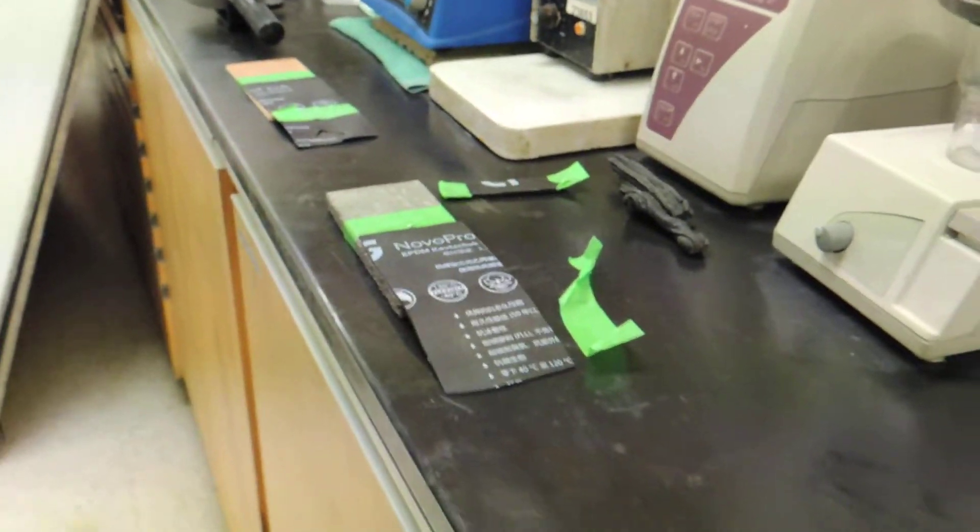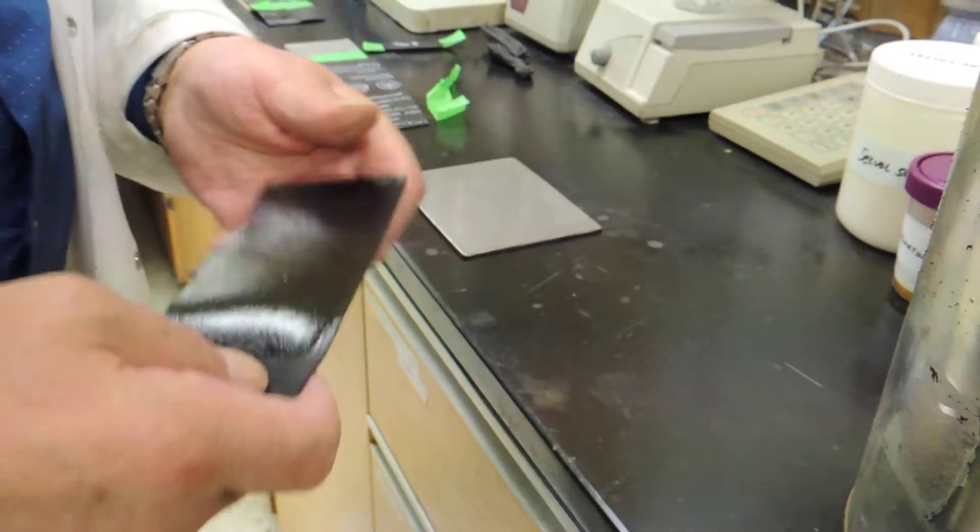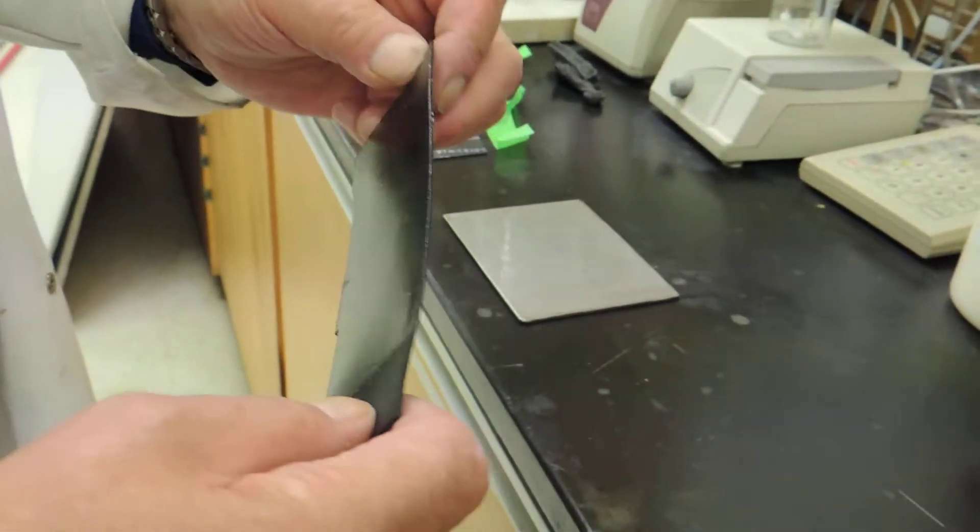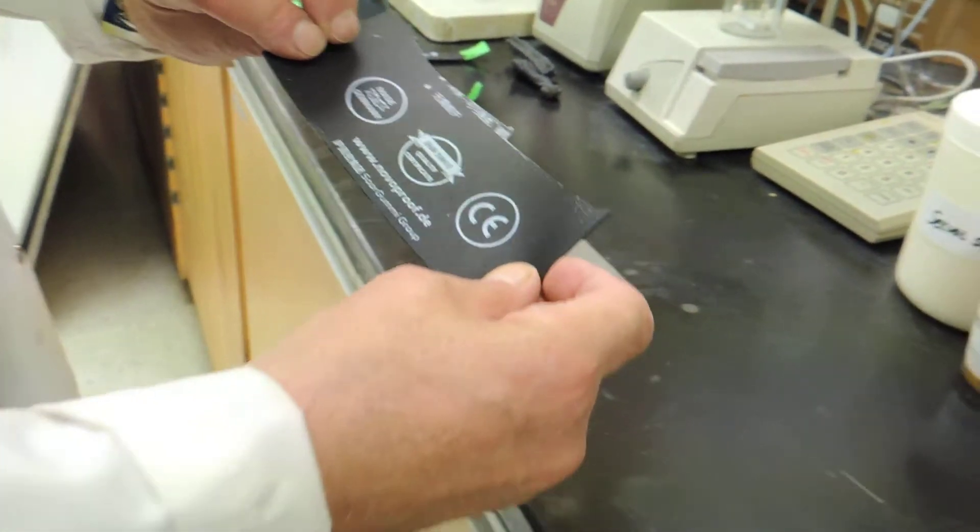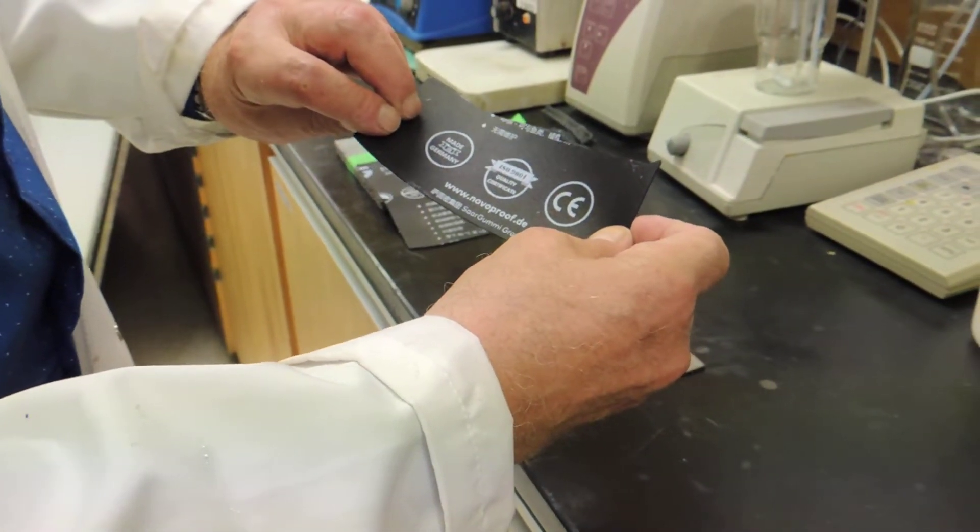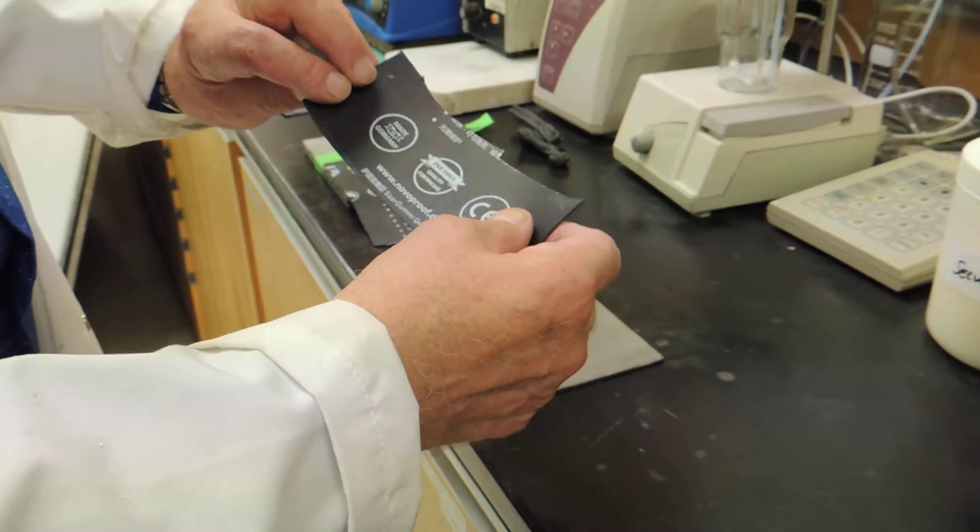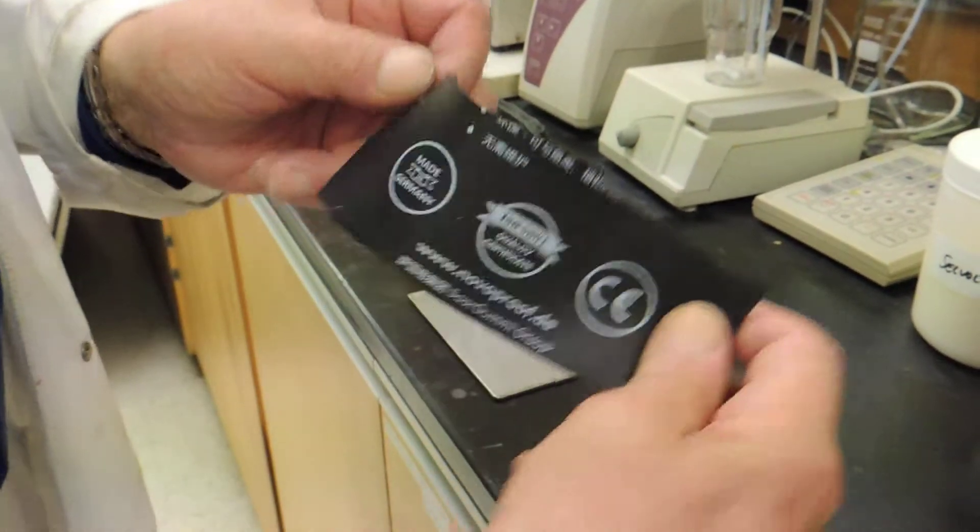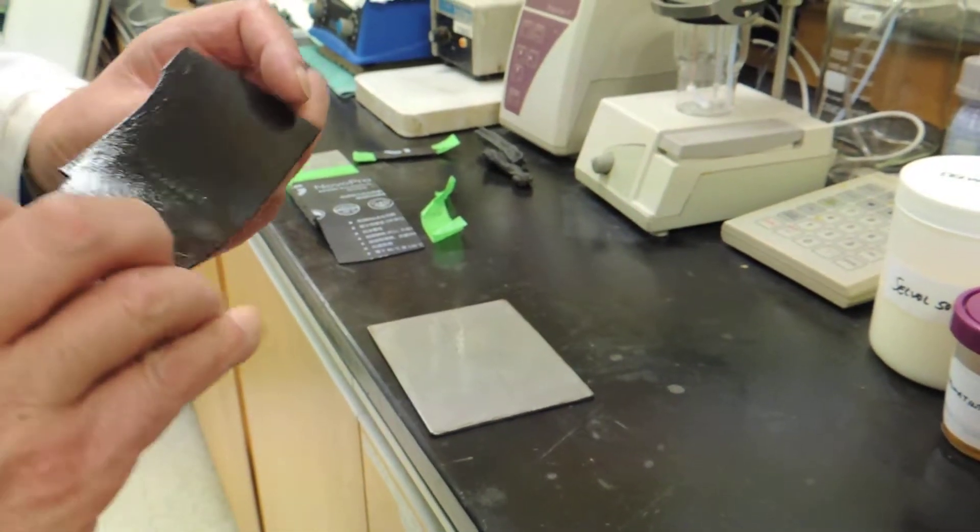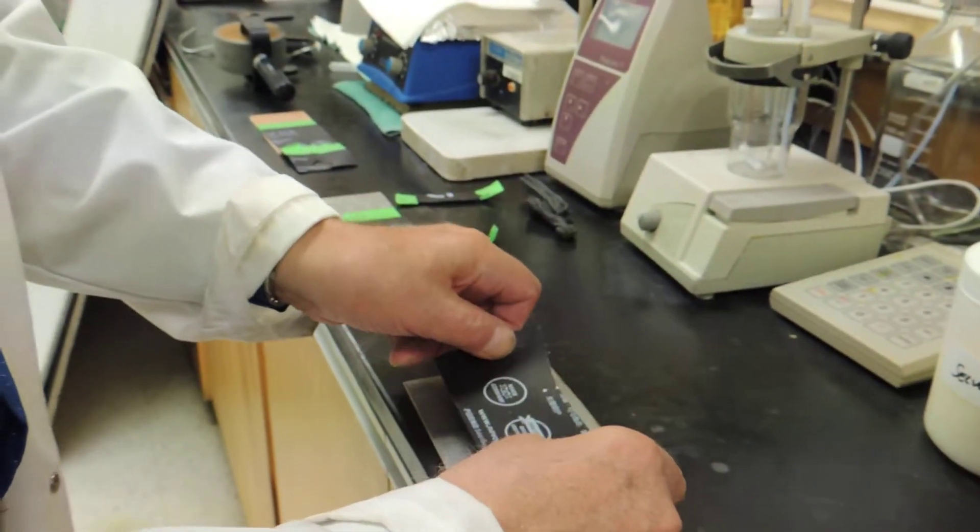We will now apply BONTAC ECO1500 coated sheet, EPDM sheet, produced by www.novaproof.com, EPDM.de. EPDM substrate, made in Germany. We will apply it to a stainless steel panel. As well, the EPDM is coated with BONTAC ECO1500.